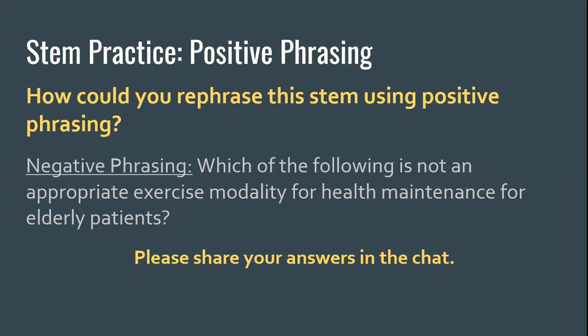Dale posted: 'Which of the following exercise modalities should be avoided for health maintenance for elderly patients?' That brings in a little discrimination — they have to discriminate between levels of appropriateness. That could get to the learning objective of determining the most appropriate way. You'd still have to be careful with 'should be avoided,' but if in real life beyond this testing scenario that's what they'd need to do — which for health professionals it probably is — then you could use that phrasing, as long as it aligns with your learning objective and the transfer of that knowledge beyond the test.